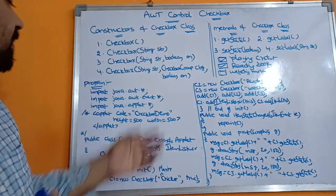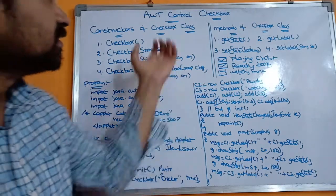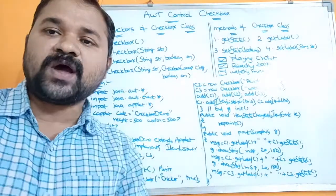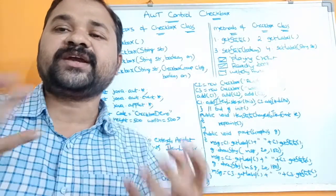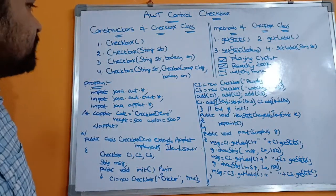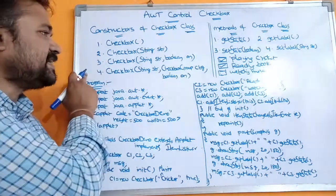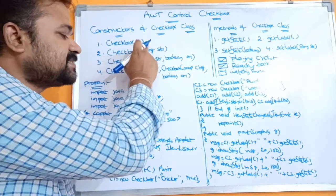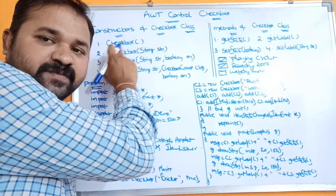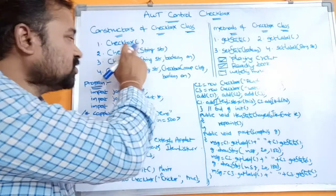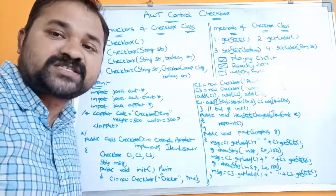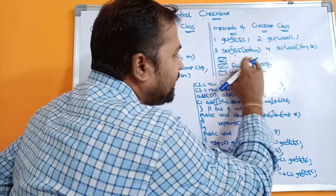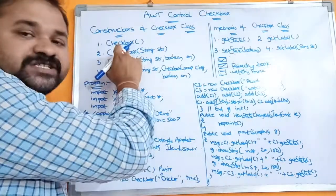Let us see the constructors of the checkbox, followed by methods of the checkbox, and then an example program to demonstrate AWT control checkbox. Totally there are three constructors. The first one is Checkbox() — an empty constructor. It will create a checkbox with no label, so the label won't be printed.